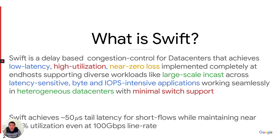The different keywords here highlight the requirements of an effective and deployable congestion control at scale, as they have come about over the course of Swift's deployment at Google. Swift achieves near 50 microseconds tail latency for short flows while maintaining near 100% utilization even at line rates of 100 Gbps and beyond.